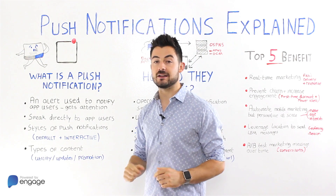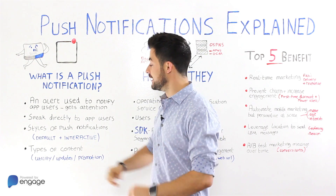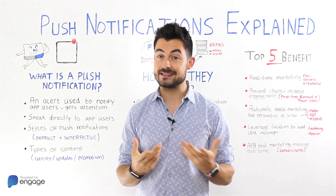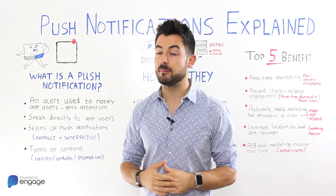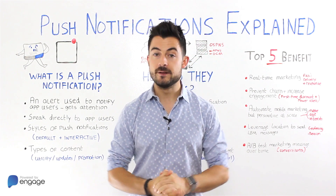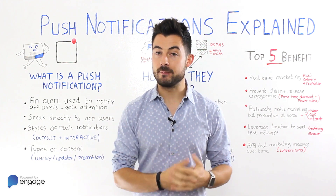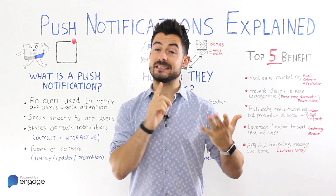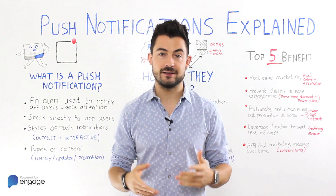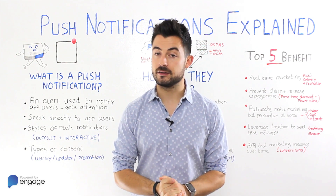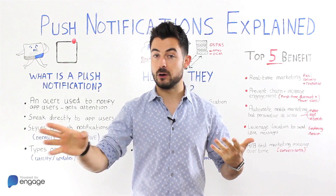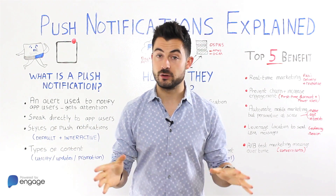There are a couple of different styles you need to know about with push notifications. First, you've got the default style which is just text — maybe a merge tag with their first name, maybe an emoji — but it's basically information, an update, or a promotion. They tap it and it deep links to part of the app. It's not interactive in any way — you tap it and you go to that place. It's like a static push notification.